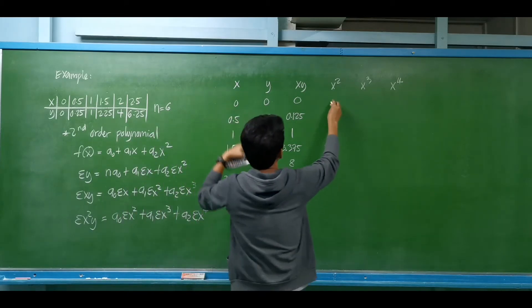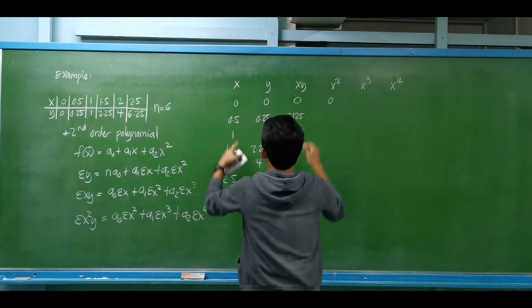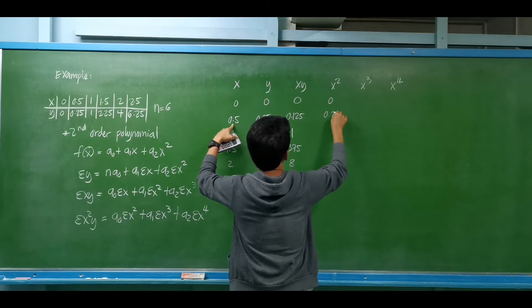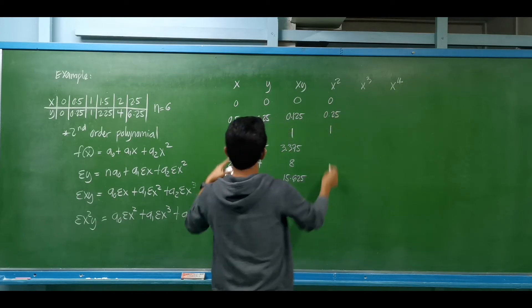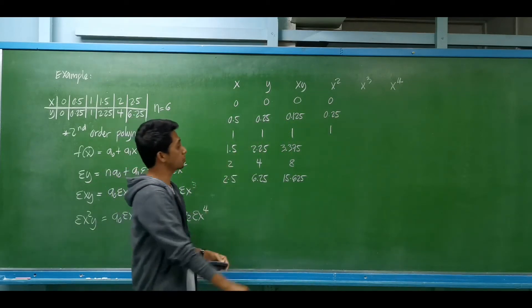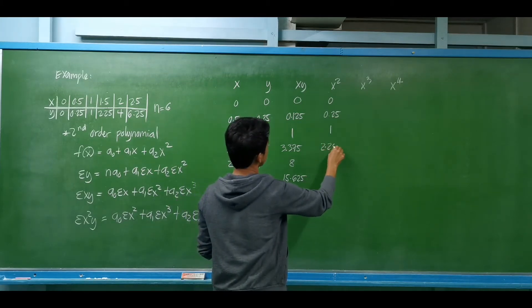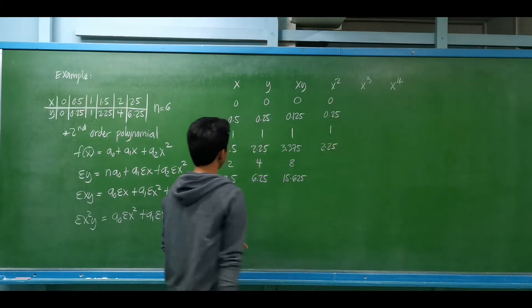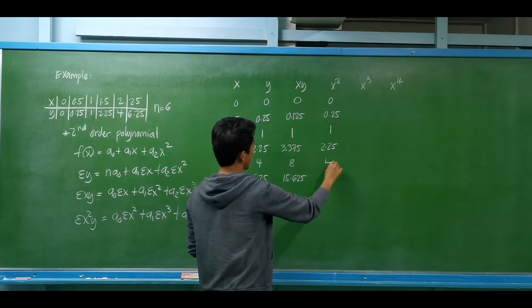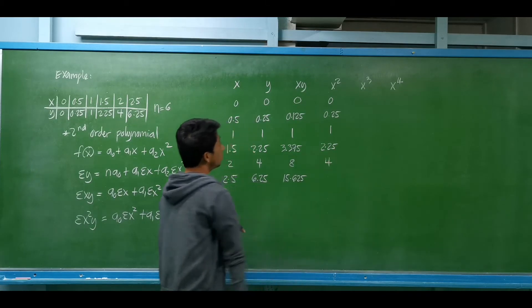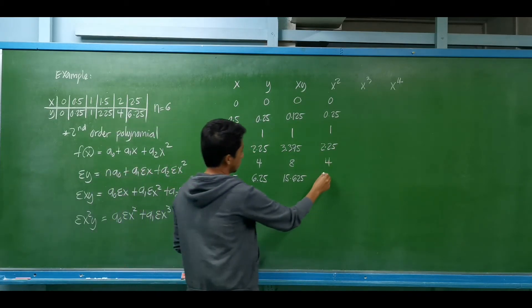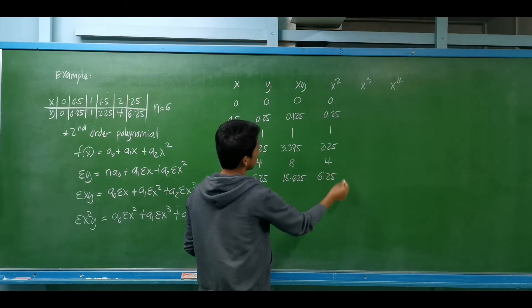For x squared: 0² = 0; 0.5² = 0.25; 1² = 1; 1.5² = 2.25; 2² = 4; and 2.5² = 6.25.